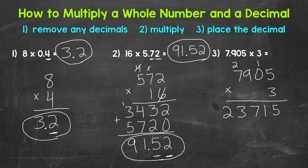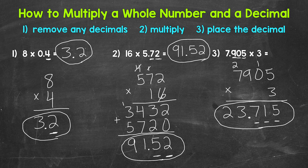But we need to place the decimal. Looking back at the original problem, we have one, two, three digits to the right of a decimal, so our answer needs the same: one digit, two digits, three digits. The decimal goes in between the three and the seven. Our final answer is twenty-three and seven hundred fifteen thousandths. So seven and nine hundred five thousandths times three equals twenty-three and seven hundred fifteen thousandths.